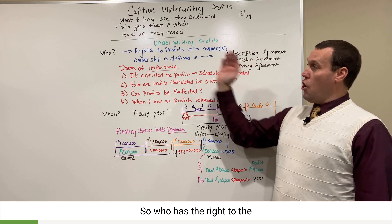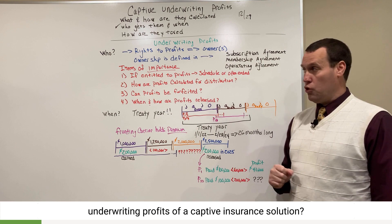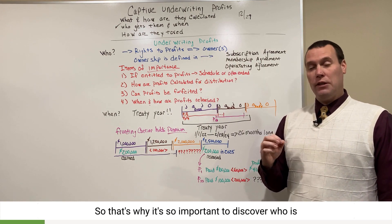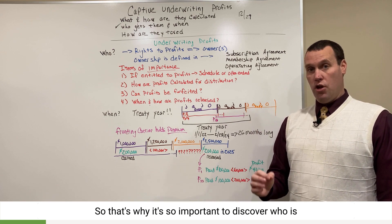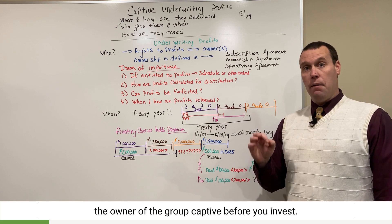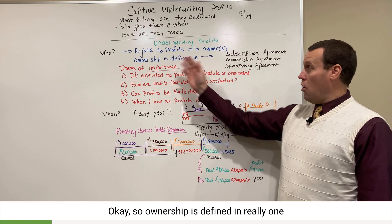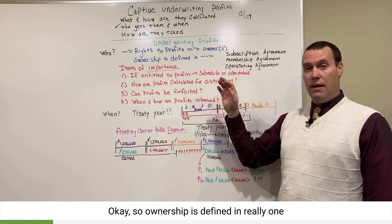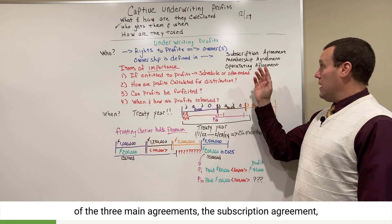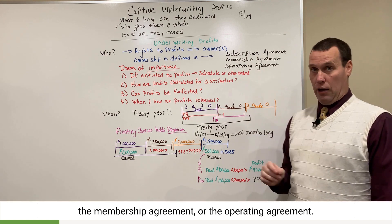Who has the right to the underwriting profits of a captive insurance solution? Simply put, the owners of the captive. That's why it's so important to discover who is the owner of the group captive before you invest. Ownership is defined in really one of three main agreements: the subscription agreement, the membership agreement, or the operating agreement.